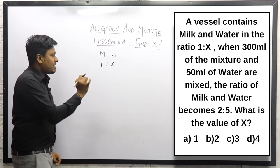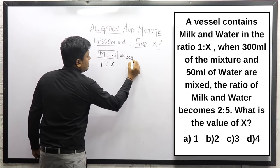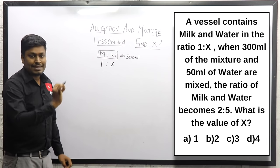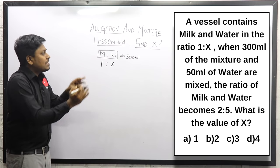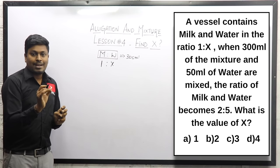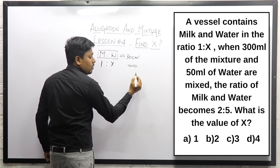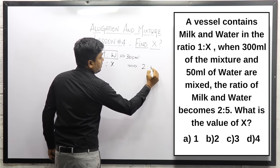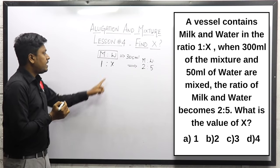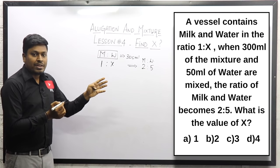When 300 ml of mixture is taken, the total milk and water together is 300 ml. To this 300 ml of mixture, 50 ml of water is added. After adding the 50 ml of water, the final ratio becomes 2 is to 5. Our target is to find the value of x. I am going to solve this in a shortcut method by using the options.